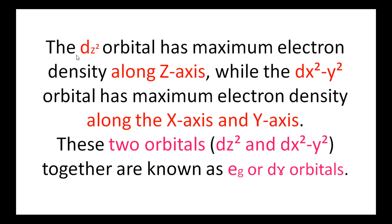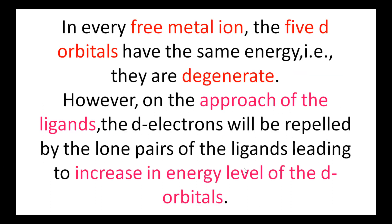The other 2 d-orbitals — dz² and dx²−y² — have maximum electron density along the z-axis and the x and y axes respectively. These 2 d-orbitals together are known as eg or d-gamma orbitals. So the 5 d-orbitals are grouped into 2 groups: the first 3 are t2g (d-epsilon) and the other 2 are eg (d-gamma) orbitals. In every free metal ion, the 5 d-orbitals have the same energy, so they are known as degenerate orbitals.